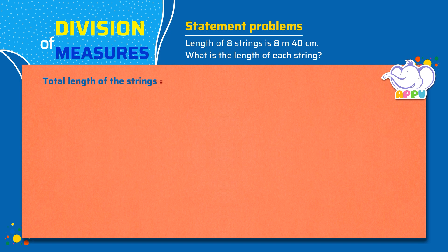Total length of the strings equals 8 meters 40 centimeters. Number of strings equals 8. To find the length of each string, we divide 8 meters 40 centimeters by 8.